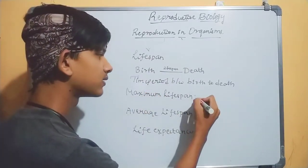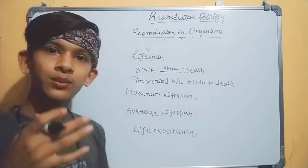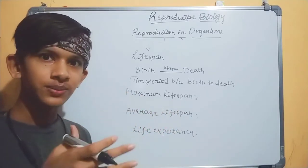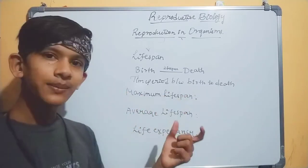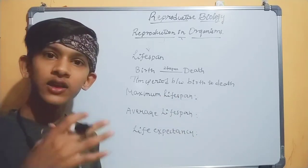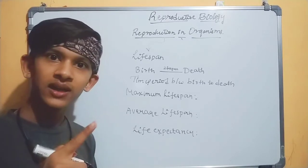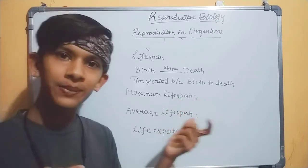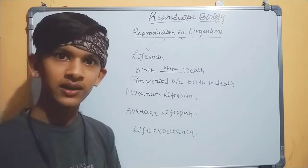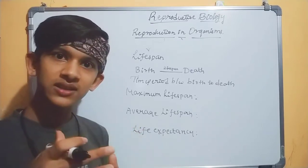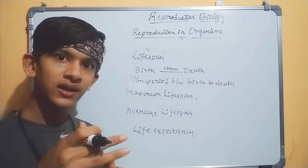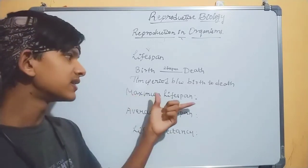Maximum life span is the most lived years of a species. For example, the most lived human — a Japanese woman is known to have lived 150 years. So those most lived years of a species are known as maximum life span.